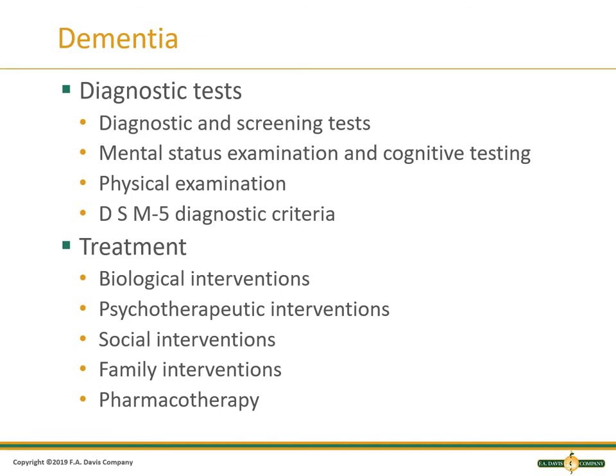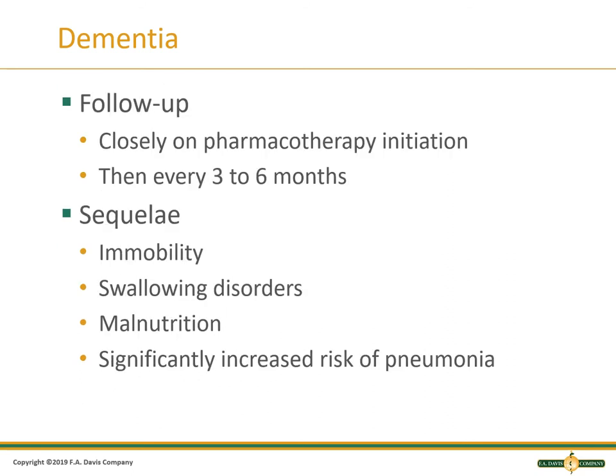You need to know what medications they're on, what support systems they have, and what community resources are available to them. Follow-up is very close for pharmacotherapy because this is the older population, and their side effects and response to medications are much different than in younger populations. Once they are stable on therapy, you can change follow-up to every three to six months.